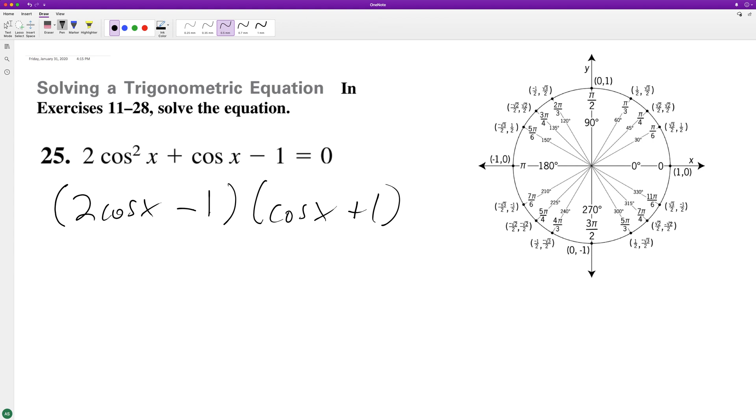So what we do here is we set each of these equal to zero, and then we solve. So this ends up being two cosine x minus one equals zero. Cosine of x is equal to one half.